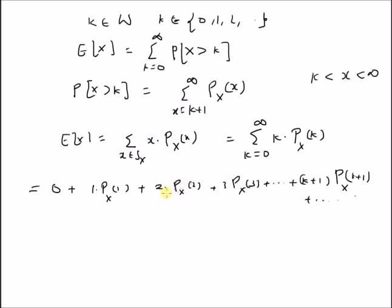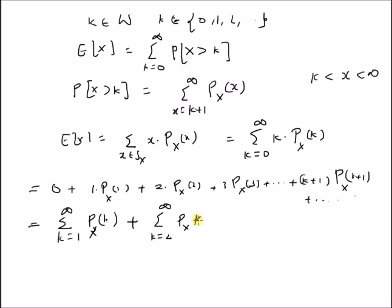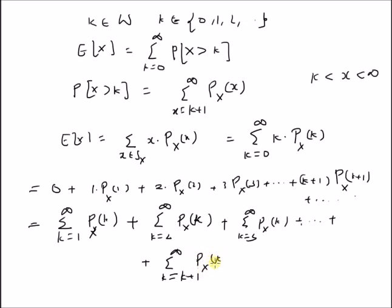We can rewrite this summation: for example, the term 2 times P_X(2) can be written as P_X(2) plus P_X(2), and similarly, writing (k+1) times P_X(k+1) as k different terms. We can then rewrite this whole summation as a summation of a series of individual summations: k equal to 1 to infinity of P_X(k), plus k equal to 2 to infinity of P_X(k), plus k equal to 3 to infinity of P_X(k), and so on, plus k equal to (k+1) to infinity of P_X(k) and so on.